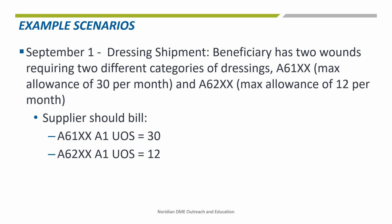In the following three slides, we will go over an example of how to bill the proper modifier to a claim when wound numbers change, as well as how to bill the dressing that will be used for each wound. As seen on September 1st, the provider ships out two different dressings for two different wounds. The first receives a quantity of 30 per month, whereas the second receives a quantity of 12 per month. As the dressings are applied independently to both wounds, the A1 modifier is appropriate for both.